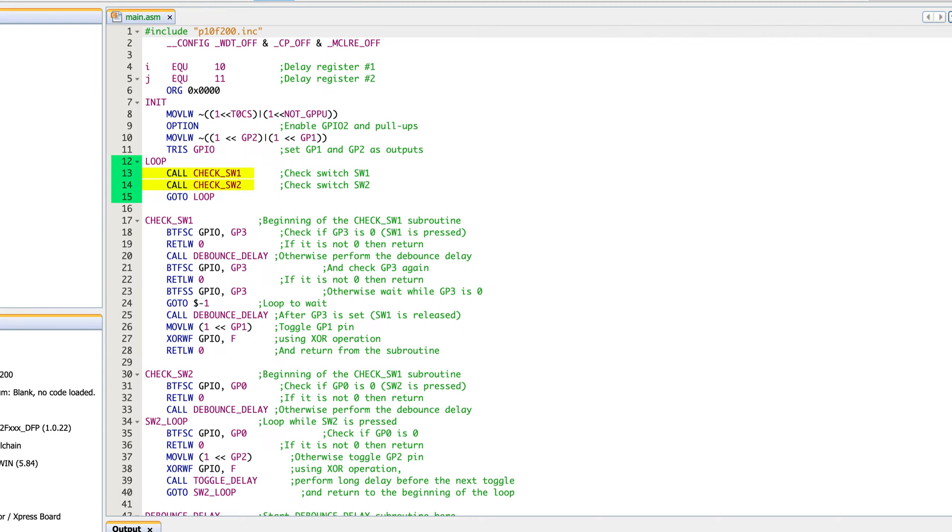As we look under check switch one, the subroutine, you will see the first and only new command we are going to learn in this particular program, and that is btfsc. That is bit test in the file register, skip if clear. So we're looking at register GPIO and the bit GP3, and we test it.